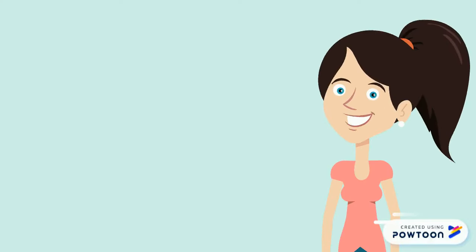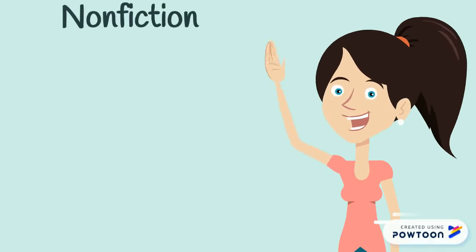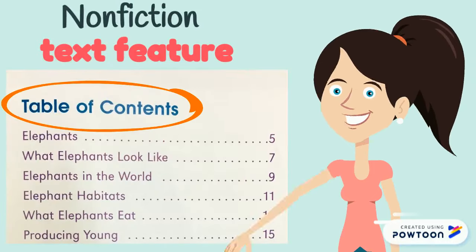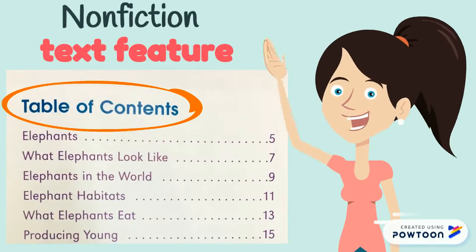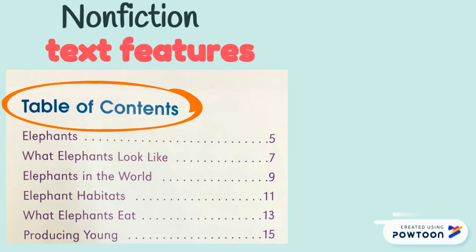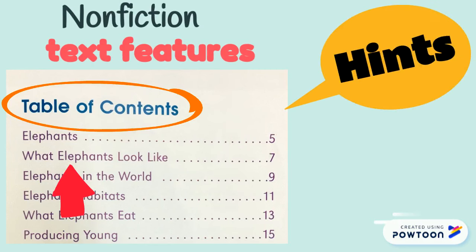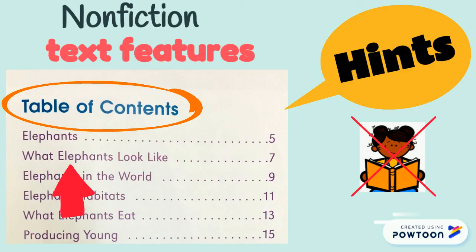Hi Grey One! In the previous lesson, we learned about one of the text features, the table of contents. Do you remember what a table of contents tells us? A table of contents tells us what page each chapter begins on. It gives us a hint, so we don't need to read through the whole book to find what we want to look for.